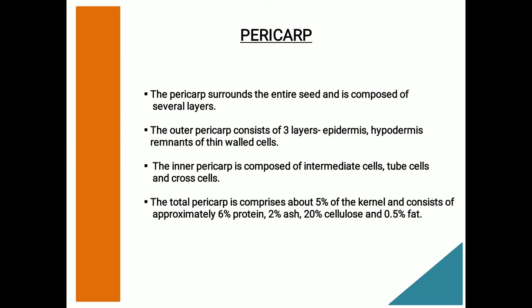The pericarp surrounds the entire seed and is composed of several layers: the outer pericarp and inner pericarp. The outer pericarp is what millers call the bee's wing. The outer pericarp consists of three layers: epidermis, hypodermis, and remnants of thin-walled cells. Next to the epidermis is the hypodermis of varying thickness, and the innermost portion of the outer pericarp consists of the remnants of the thin-walled cells.